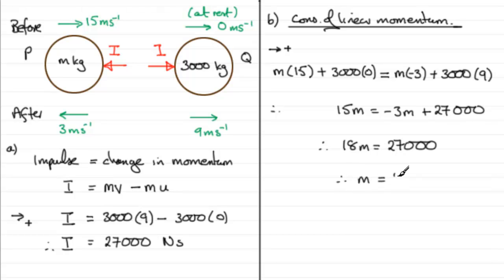And then if we divide both sides by 18, you end up with m equals 27,000 divided by 18, and what you end up with is exactly 1500. So m equals 1500.